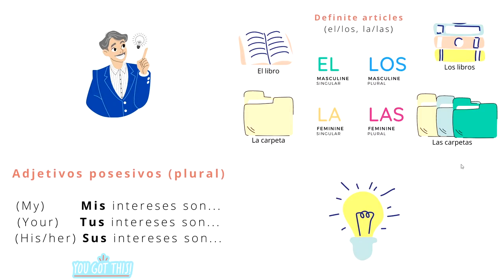Now, you will see some definite articles — el, los, la, las — which we have spoken about in previous video lessons, and this is just to give you a little preview. How will you say, for example, 'my hobbies are'? Mis intereses son. Mis intereses son.